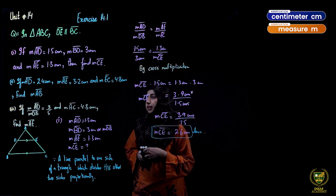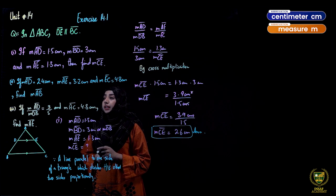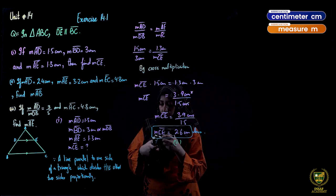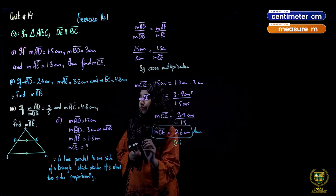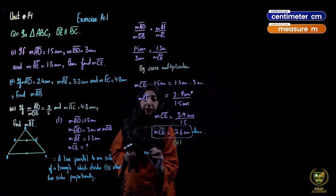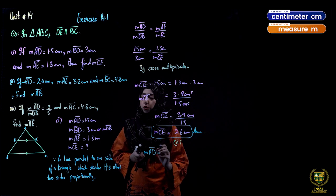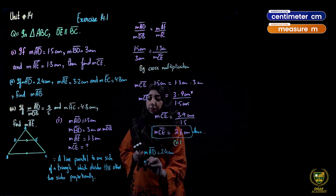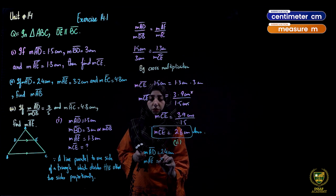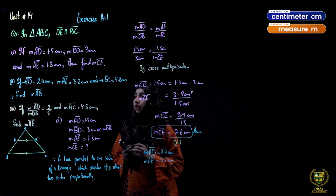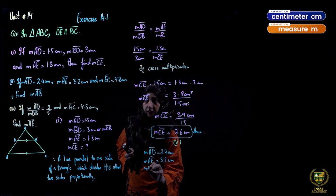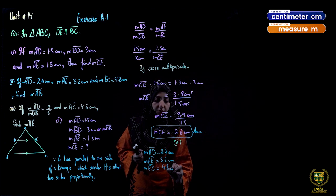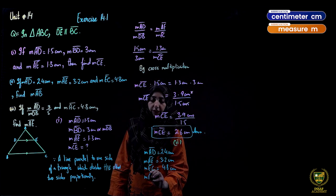The first part is solved. Now we move to the second part. If AD = 2.4 cm, AE = 3.2 cm, and EC = 4.8 cm — and what we have to find is AB.